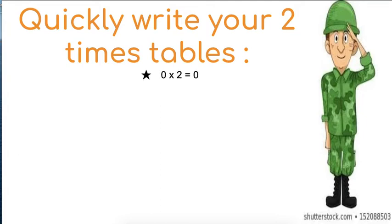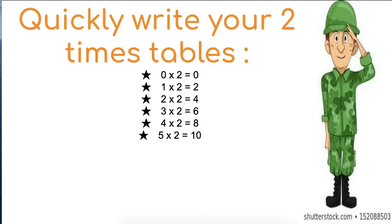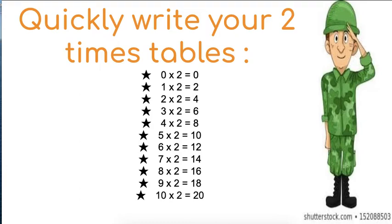Right, let's check. 0 times 2 is 0, 1 times 2 is 2, 2 times 2 is 4, 3 times 2 is 6, 4 times 2 is 8, 5 times 2 is 10, 6 times 2 is 12, 7 times 2 is 14, 8 times 2 is 16, 9 times 2 is 18, 10 times 2 is 20, 11 times 2 is 22, and the last one, 12 times 2 is 24.